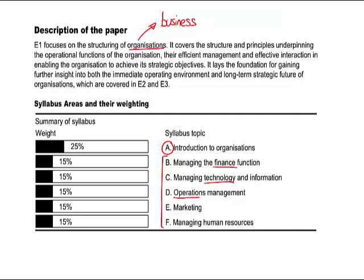In addition to technology, we also look at operations management — the heart of what the business does, the action or process that the business offers. If I'm a retailer, my operations are all to do with getting products in, selling them and getting them to the customer. If I'm a manufacturer, operations involve taking raw materials, processing them in some way and delivering an output. When we look at operations management, we're thinking about the relationship with other parts of the business — technology strategy shouldn't be developed in isolation from operations strategy, and the finance function needs to be linked to these as well.